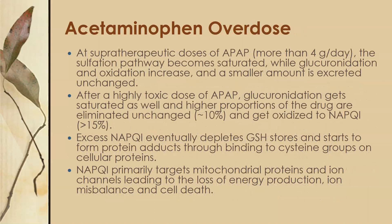At supratherapeutic doses — anything more than 4 grams per day — the sulfation pathways become saturated. While glucuronidation and oxidation increase, a smaller amount is excreted unchanged. After a highly toxic dose, glucuronidation gets saturated as well, and a higher proportion of the drug is oxidized to NAPQI — more than 15% — which causes all the damage. NAPQI eventually depletes the glutathione stores and then starts to form protein adducts through binding to cysteine groups on cellular proteins, and that is where it starts causing all the damage.